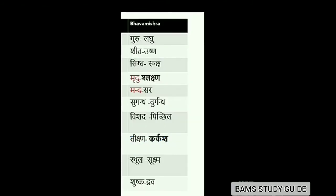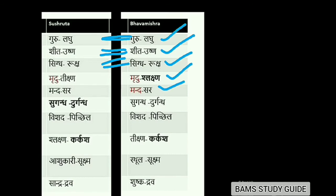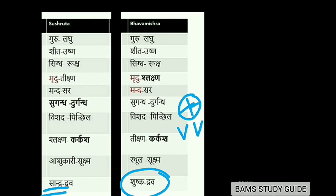Coming to Bhavprakasha, the same dual qualities mentioned by Sushruta are given but with some changes. The 10 pairs according to Bhavprakasha are: Guru–Laghu, Shita–Ushna, Snigdha–Ruksha, Mridhu–Slakshna, Mandha–Sara, Sugandha–Durgandha, Vishada–Pichali, Tikshna–Karkasha, Sthula–Sukshma and Shushka–Drava. A unique quality mentioned by Bhavprakasha is Shushka Guna — while all other authors mentioned Sandhra as the opposite of Drava, Bhavprakasha mentioned Shushka. This Shushka Guna can be categorized under Sandhra or Ruksha.